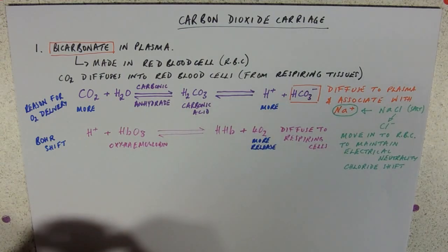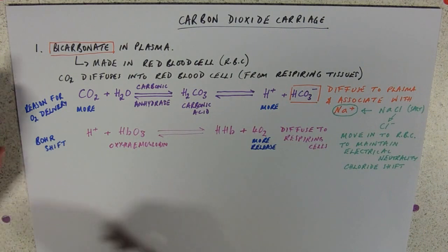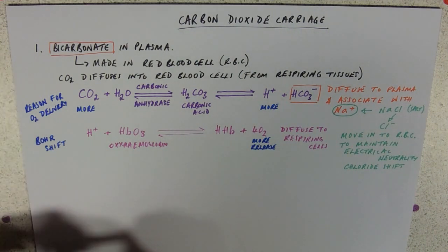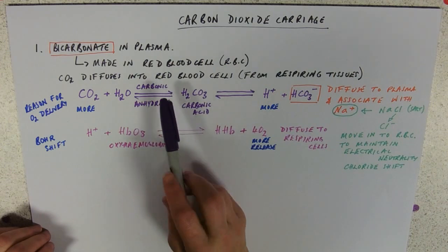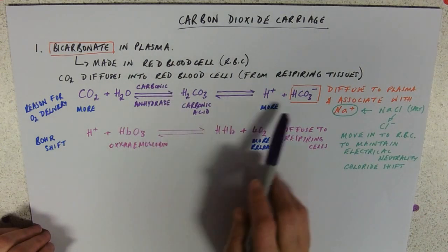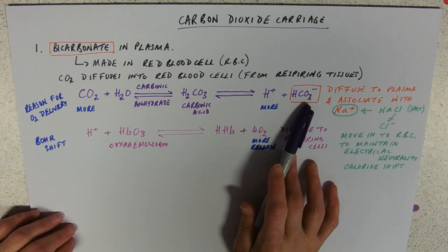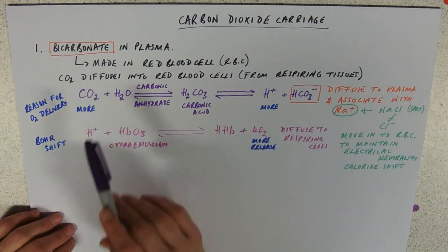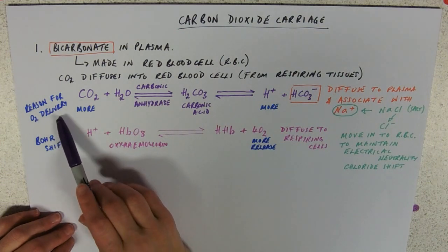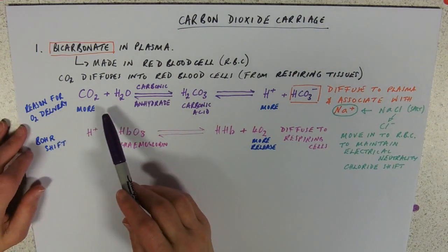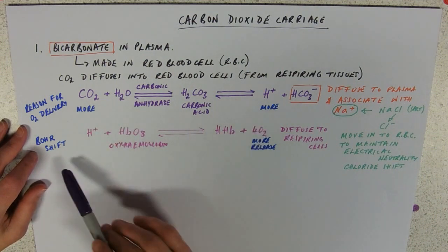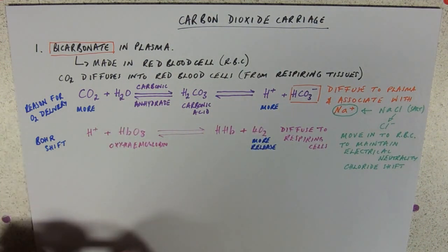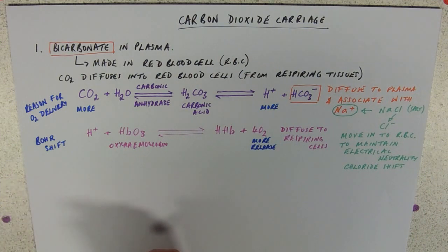So that's method one that looks horrifically complicated. It's not that complicated. You just need to learn it. You do need to know the name of the enzyme. You do need to know that the bicarbonate ends up in the plasma. And you need to know that relationship between carbon dioxide production and oxygen delivery. And also that the more you've got, the more oxygen you can deliver. And that relates to the Bohr shift. So that's all reasonably straightforward.